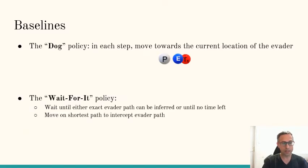Another possible baseline is what we call the wait-for-it policy. In this policy, the pursuer stays in place and watches the evader move. And once it's sure what path the evader has chosen, it computes the shortest path to intercept that. This would work very well in some cases but in other cases it would be very bad. In this example, if the pursuer would use the wait-for-it policy, it would start to move only when it's too late.